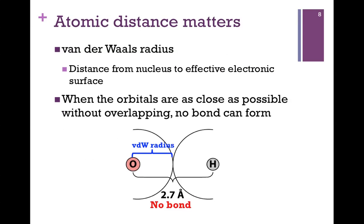In order to better understand what we mean by bonding and the approach of these atomic orbitals, let's do a brief review of the van der Waals radius. This is the distance from the nucleus to the effective electronic surface. In our illustration at the bottom of the slide here, you'll see the van der Waals radius for oxygen, indicated by the blue bracket from the center of the nucleus to the outer shell of that electronic surface. When two atoms come close together but there's no overlap, then there is no bond. In that case, the distance between the nuclei is simply the sum of the van der Waals radii.